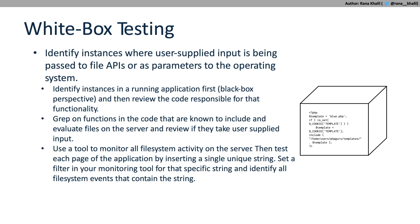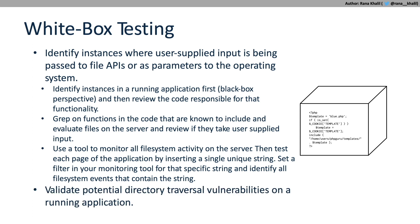A third option, if you have local access to the application, is to use a tool to monitor all file system activity on the server. Insert a unique string in each parameter, filter your monitoring tool for events containing that string, and if events appear, the application is interacting with the file system. Regardless of method, you always have to validate vulnerability by entering your exploit payload in a running application.